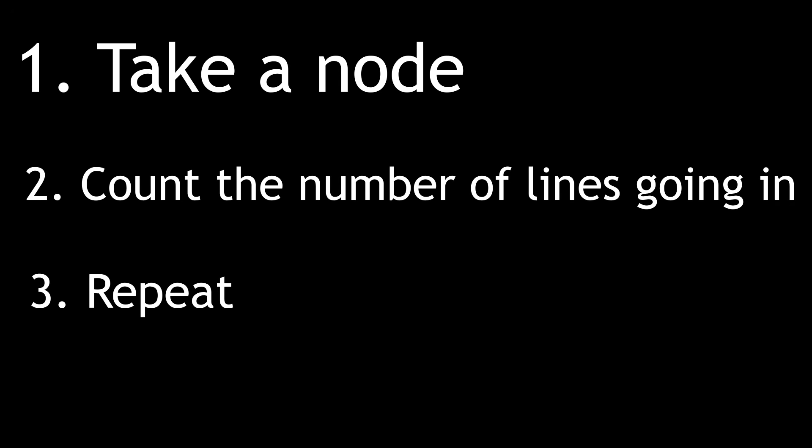Now, we've established a kind of very short algorithm. Take a node, and add up the number of lines going into it. This will give us the number of people telling the truth, if that person is the thief. Then move on to the next node, and repeat.